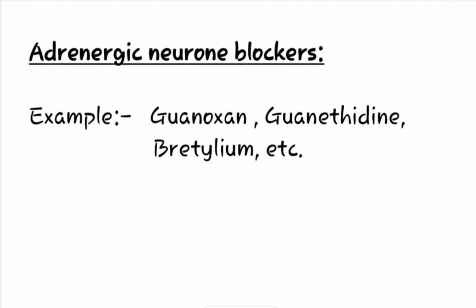The third category of classification is adrenergic neuron blockers. The examples of adrenergic neuron blockers are guanoxine, guanethidine, bretlium, etc.